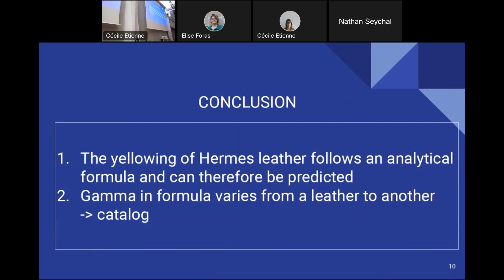And so to summarize, how does the apparent color of Hermès leather change over time? Firstly, we measured the spectral reflectance of each leather sample. Then we compared it to an analytical model, and we looked for the gamma to recover the measured reflectance. So we can predict the evolution of yellowing of each leather. And it should be noted for each leather, the gamma value is different, and therefore, the evolution of yellowing is different for each leather.